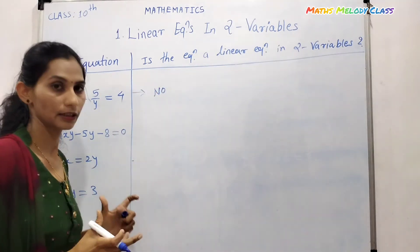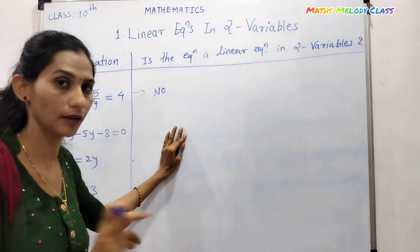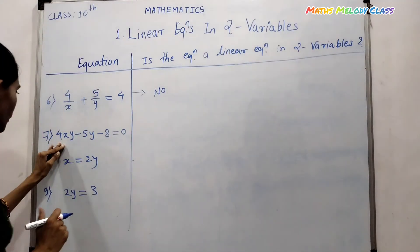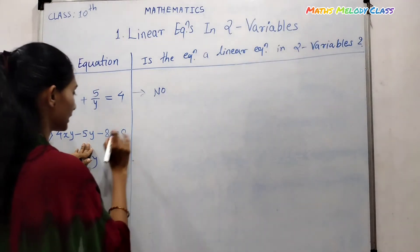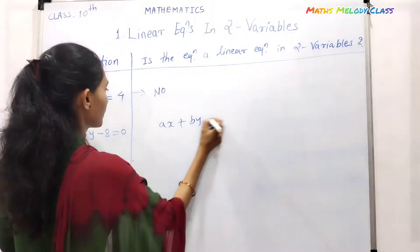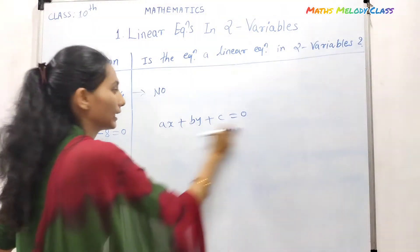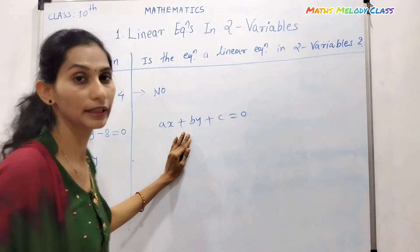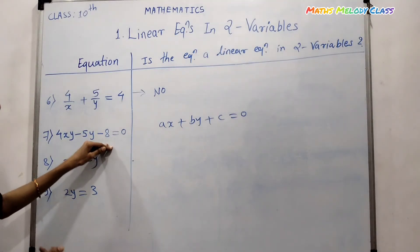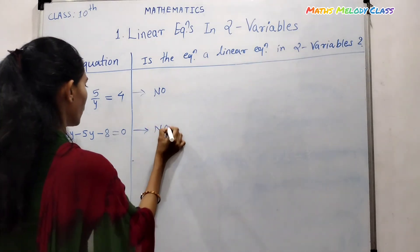Next: xy minus 5y minus 8 equals zero. Comparing with ax plus by plus c equals zero, the term xy is not a valid linear term — it is a product of two variables. We can say this is not a linear equation, and hence I will write here: no.